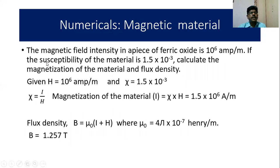Next problem is on magnetic material. The magnetic field intensity in a piece of ferric oxide is 10⁶ amp/m. If the susceptibility of the material is 1.5 × 10⁻³, calculate the magnetization of the material and flux density. The given information is here.